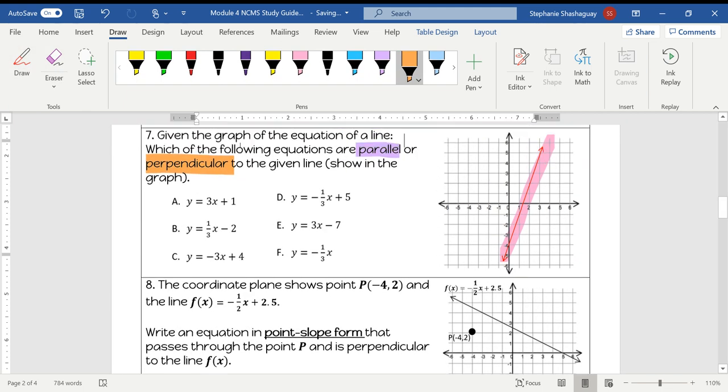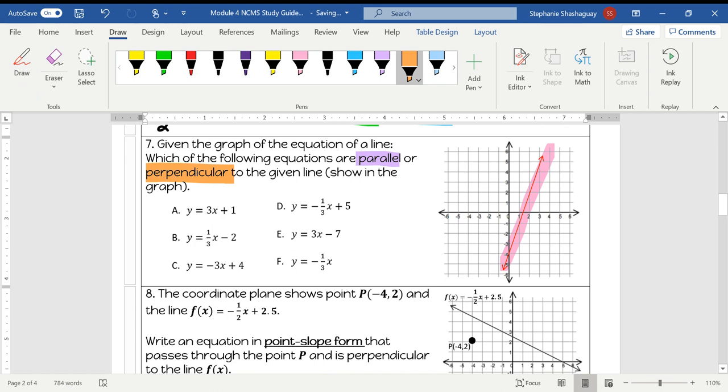So we're going to look at this equation and the first thing we need to do is determine the slope or our M value. From this point we can figure out what our slope is by looking at our intercept. First this point is 0, negative 4.